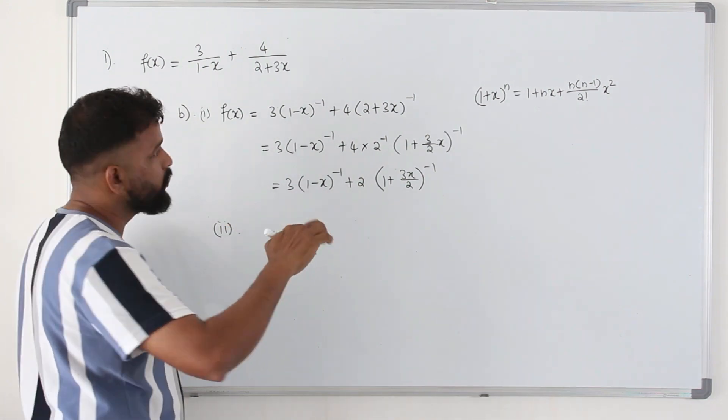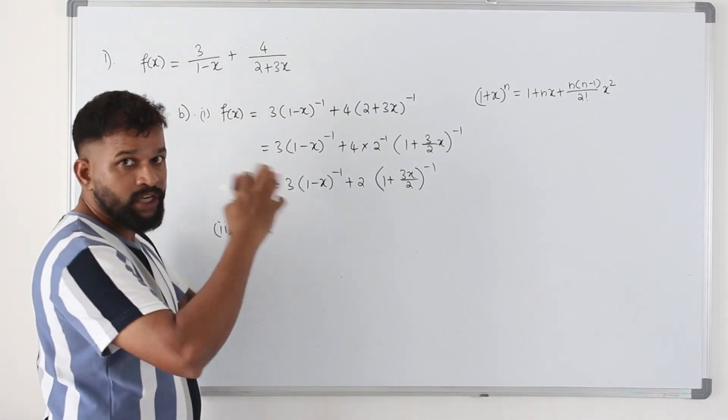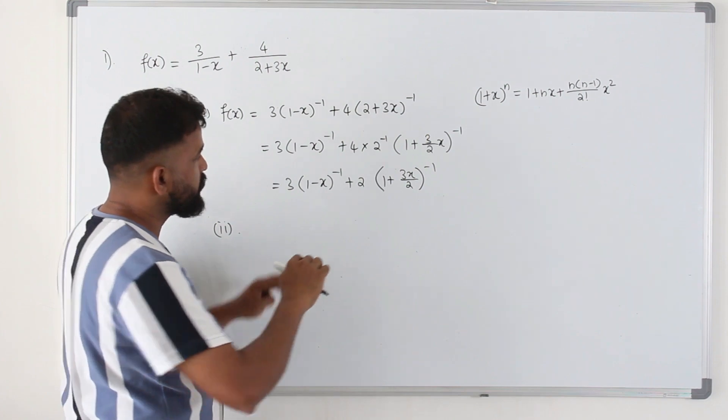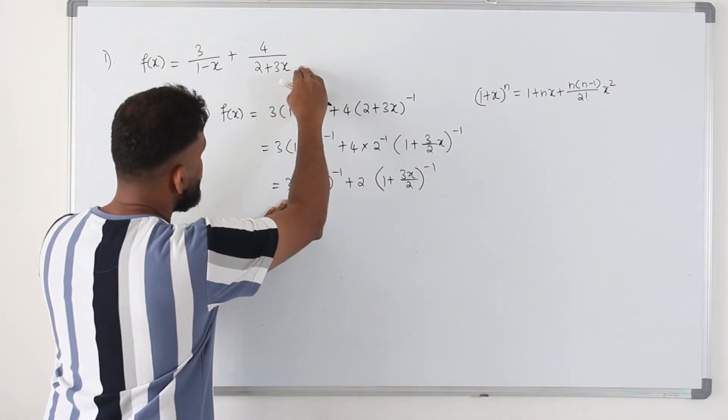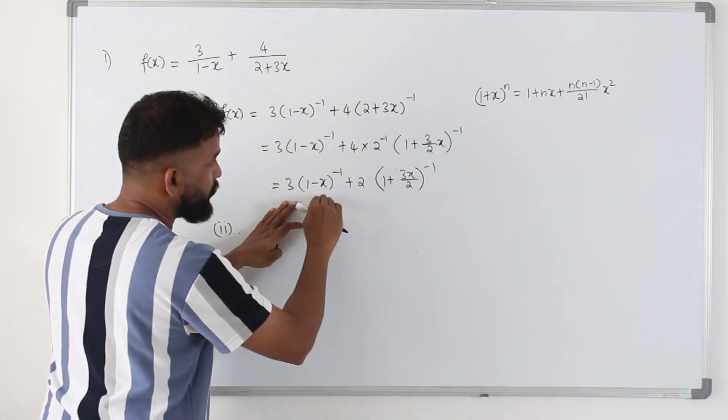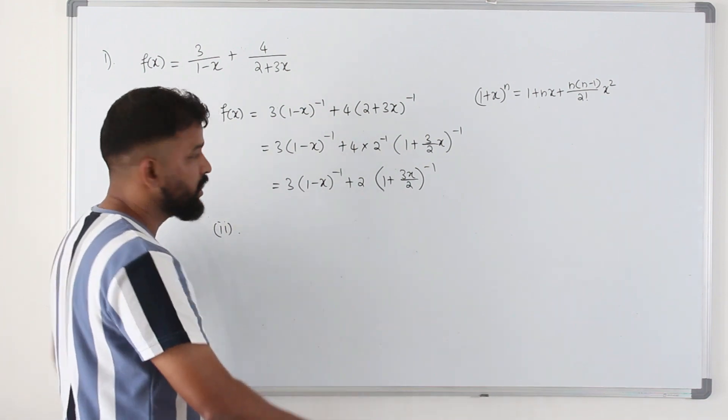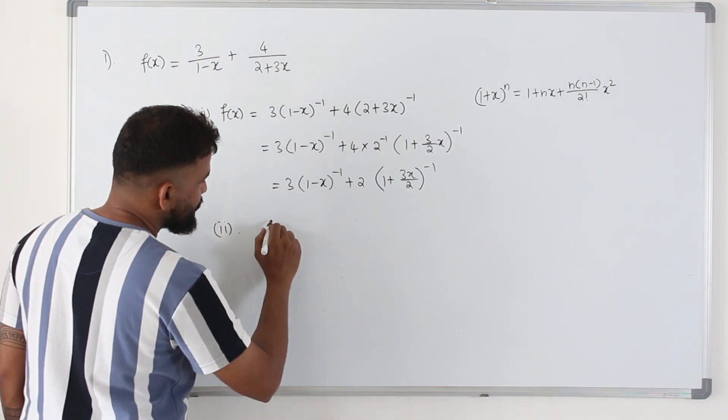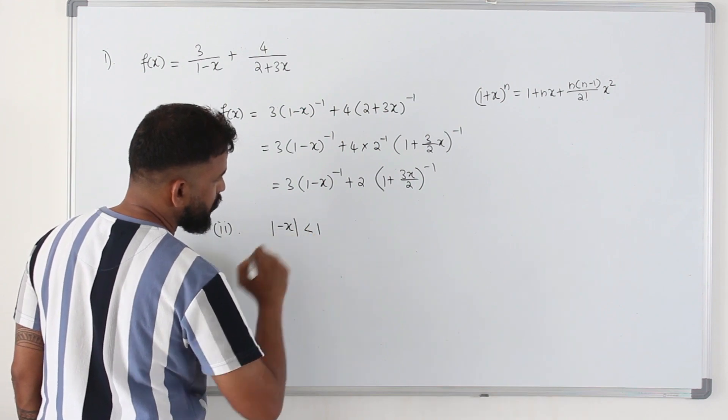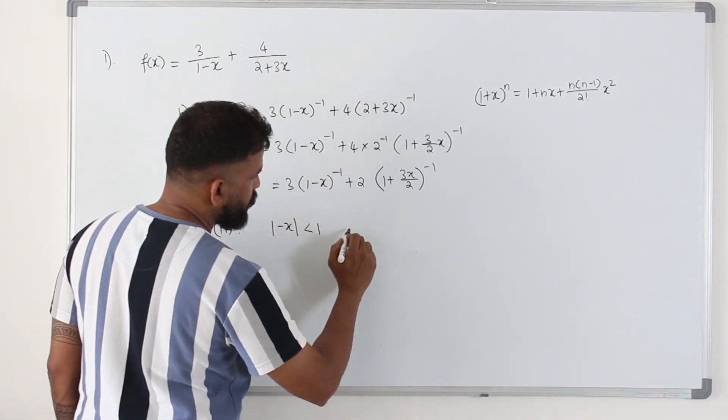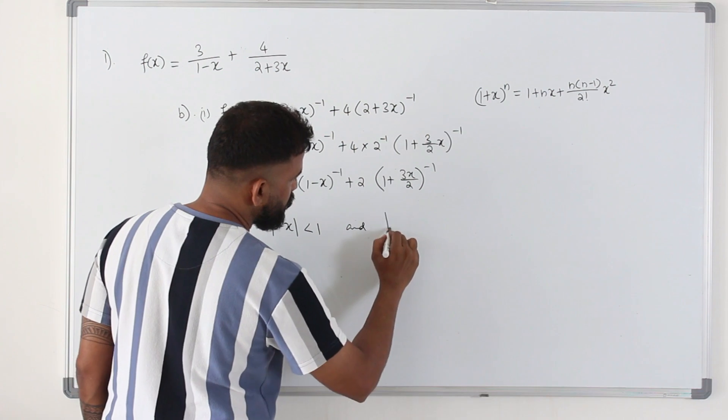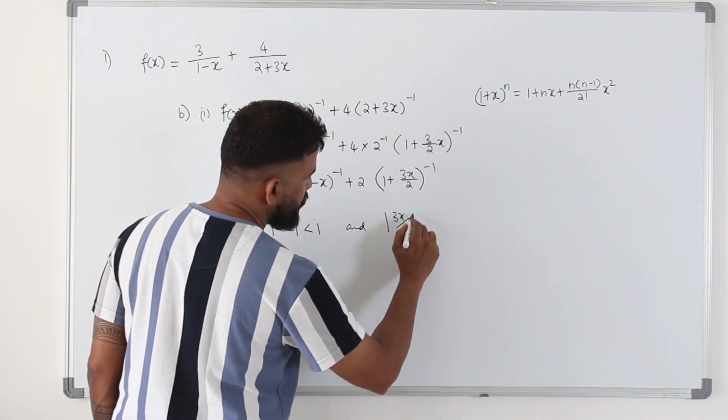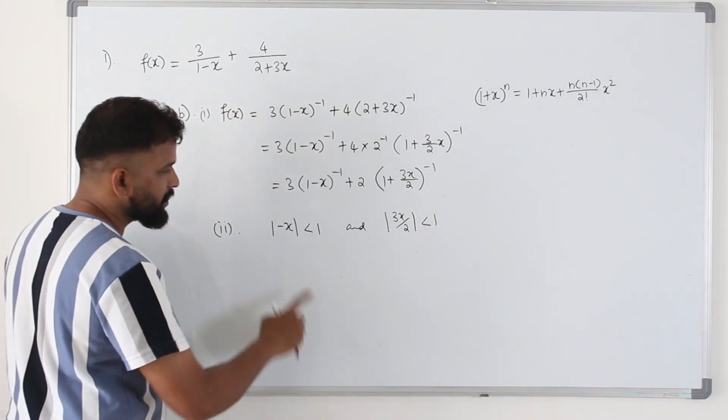So to find the range of values, you need to look at the step where you applied the binomial expansion. This is where we applied, not here, right? We rearranged it. We applied binomial expansion right from here. So here, take the second term, put it as less than 1 for this one. And for this one, modulus second term is less than 1. Make x as a subject.